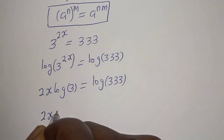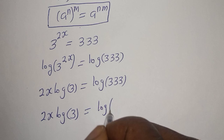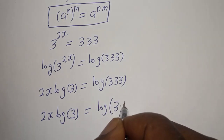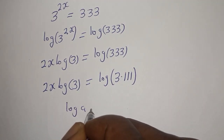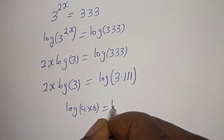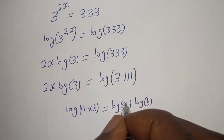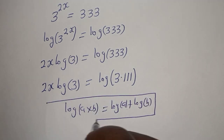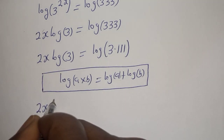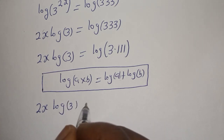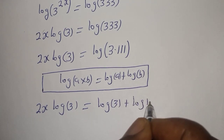We have 2s times log 3 equals log 333. The right side, log 333, can be written as log of 3 multiplied by 111, which equals log 3 plus log 111.